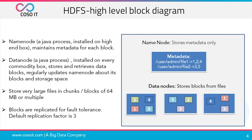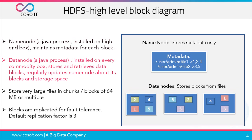Looking at the HDFS high-level block diagram, we can see two main components of HDFS. One is the name node and the other is the data node. The name node is a Java process that stores metadata only, while data nodes are the nodes that store the actual data in the cluster. It is installed on every commodity box, stores and retrieves data blocks, and regularly updates the name node about its blocks and storage space.